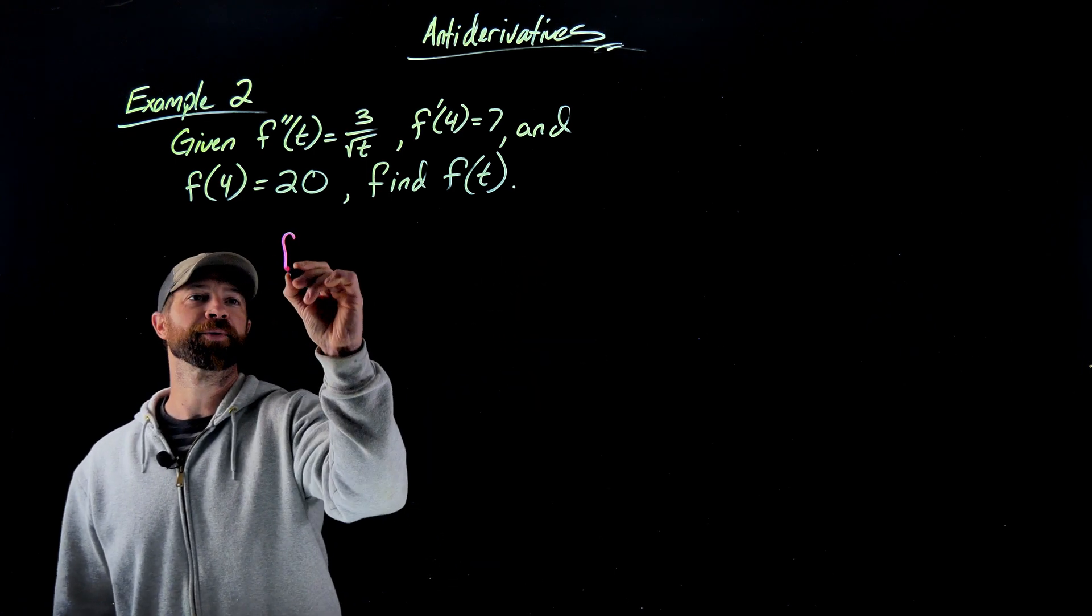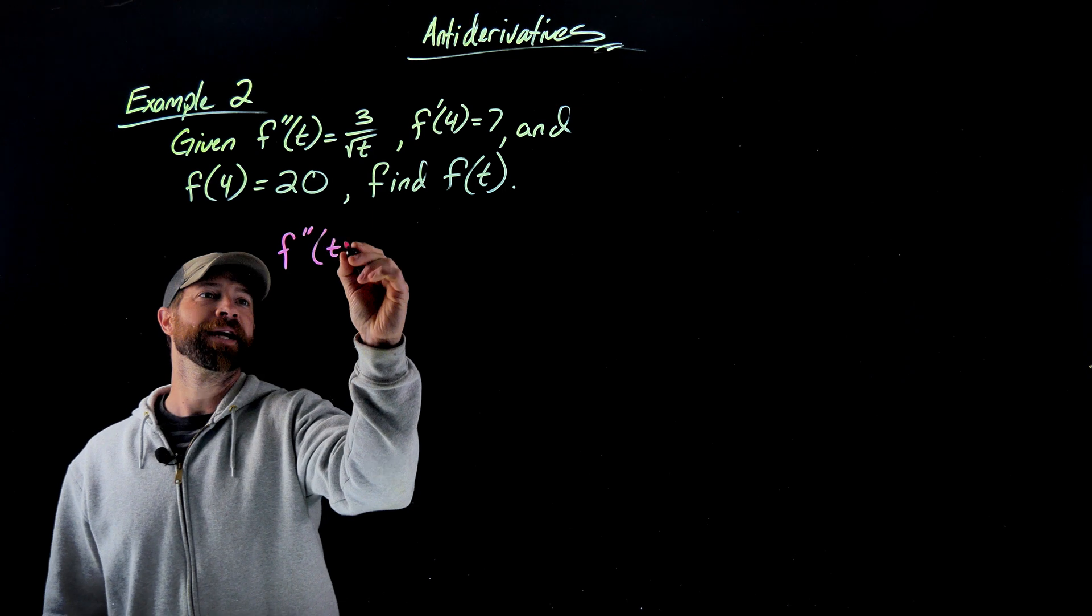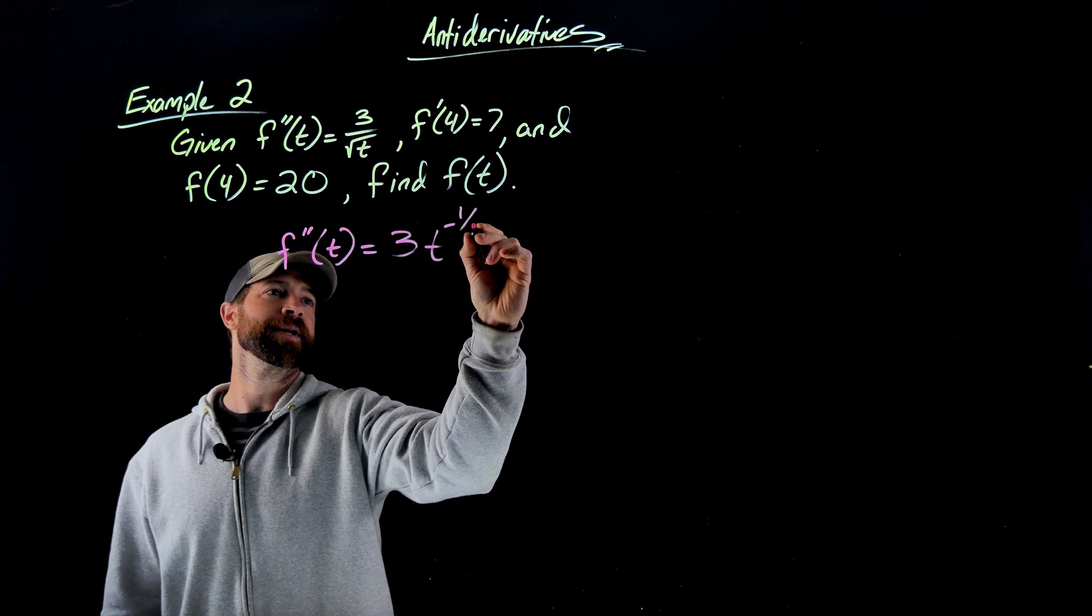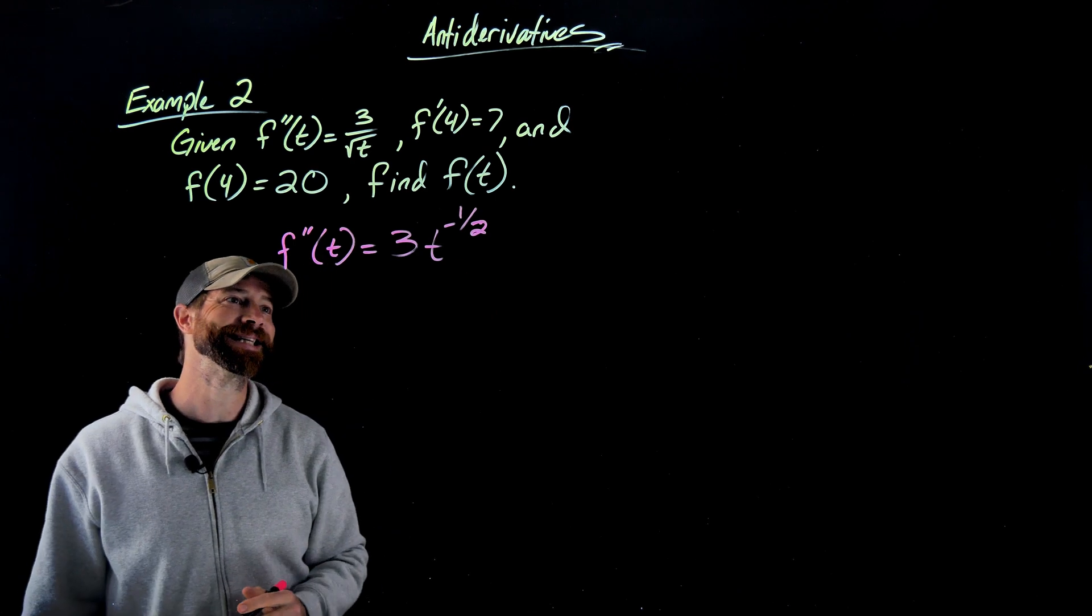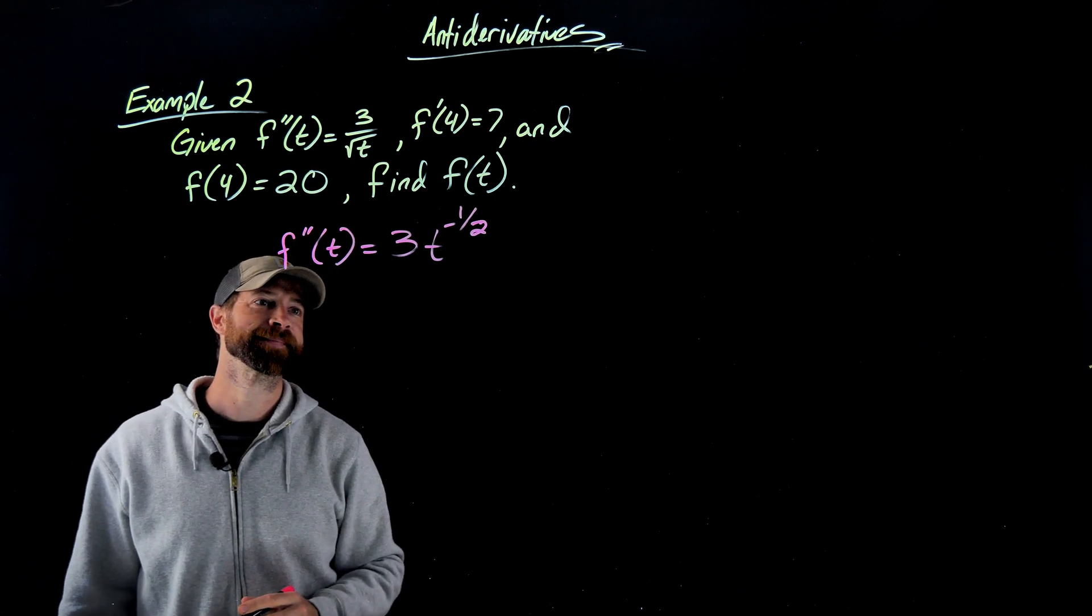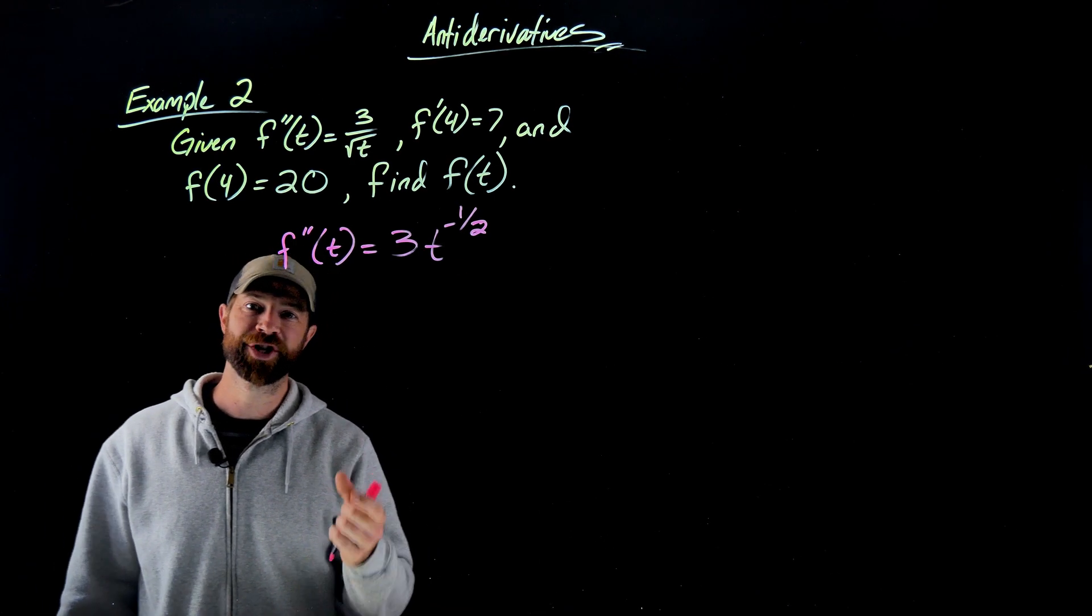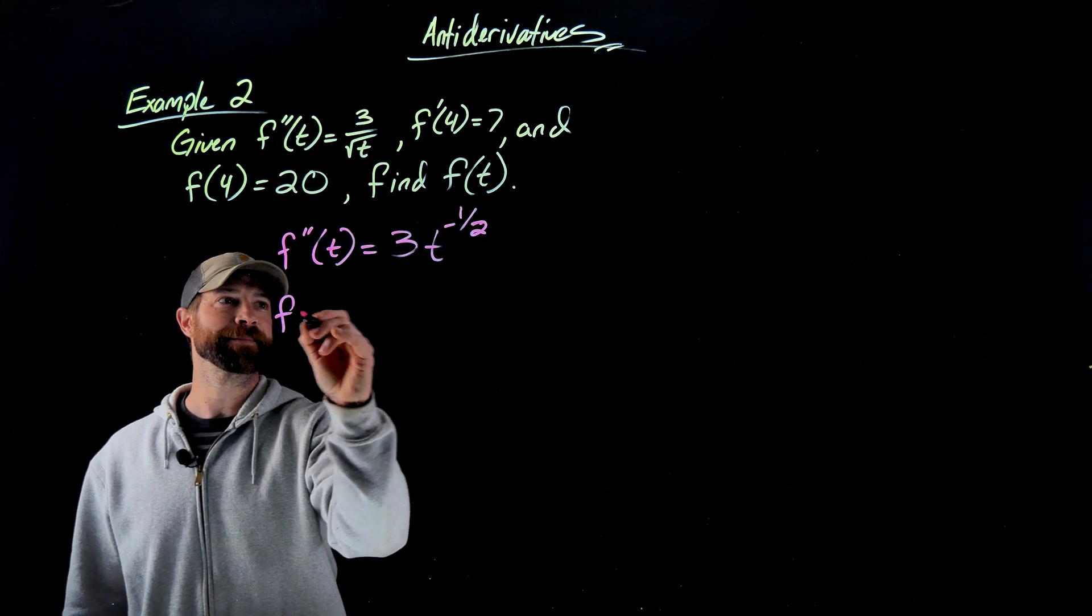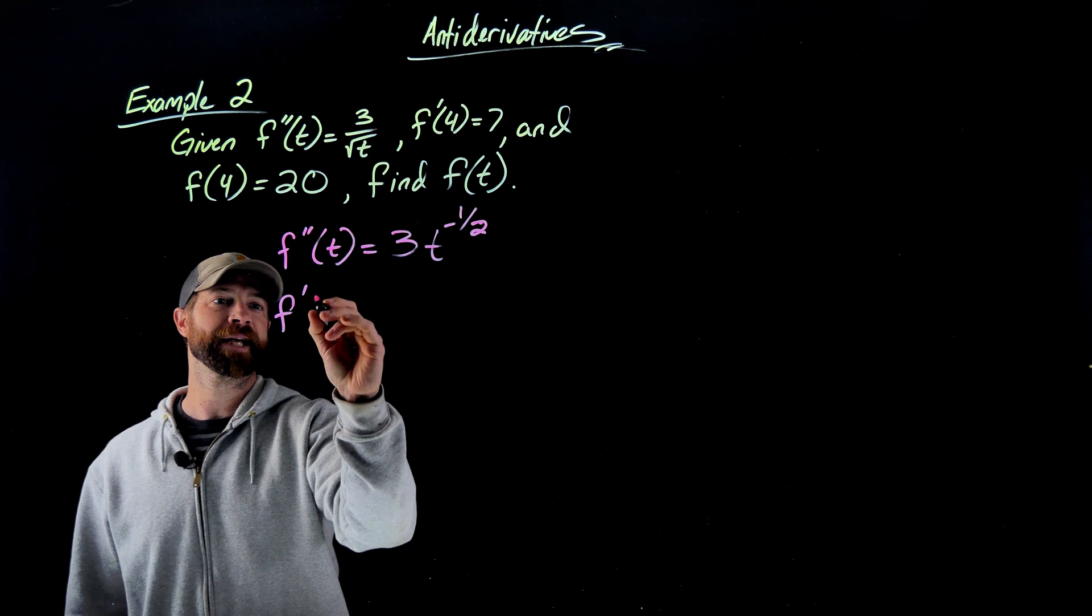First things first, I'm going to rewrite this second derivative a little bit nicer so it's easy to anti-differentiate. This would be 3 times t to the negative 1 half. Now I want to find my general form of my first derivative by anti-differentiating this. I'm simply going to use this anti-power rule again.